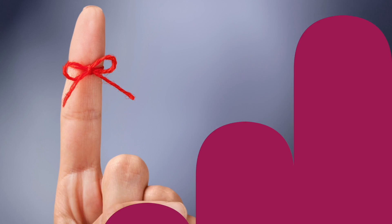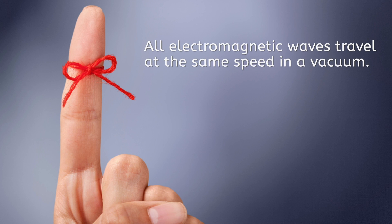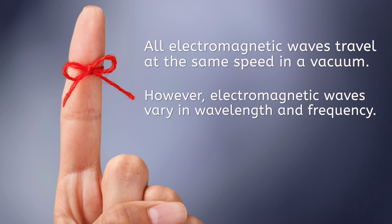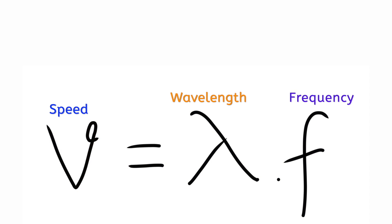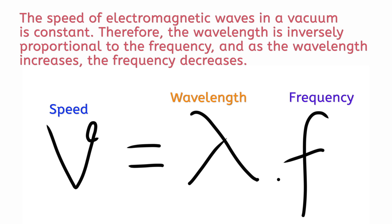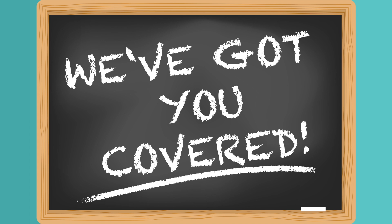As we learned earlier in the lesson, all electromagnetic waves travel at the same speed in a vacuum. However, not all electromagnetic waves are the same — electromagnetic waves vary in wavelength and frequency. The speed of an electromagnetic wave is the product of its wavelength and its frequency. Because the speed of electromagnetic waves in a vacuum is constant, the wavelength is inversely proportional to the frequency: as the wavelength increases, the frequency decreases. When it comes to challenging math concepts, we've got you covered in the post-lesson resources.